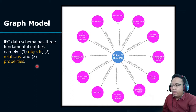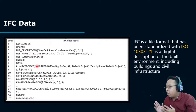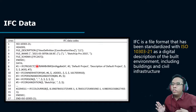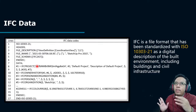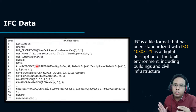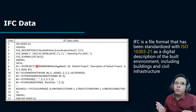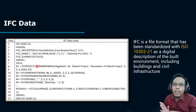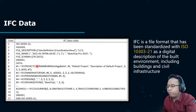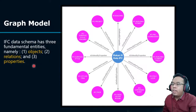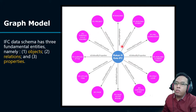After obtaining the IFC data, we parse it into JSON format. After parsing, we model it into a graph database — first modeling the metadata, then the graph database or graph model itself. This is the result of the graph model.